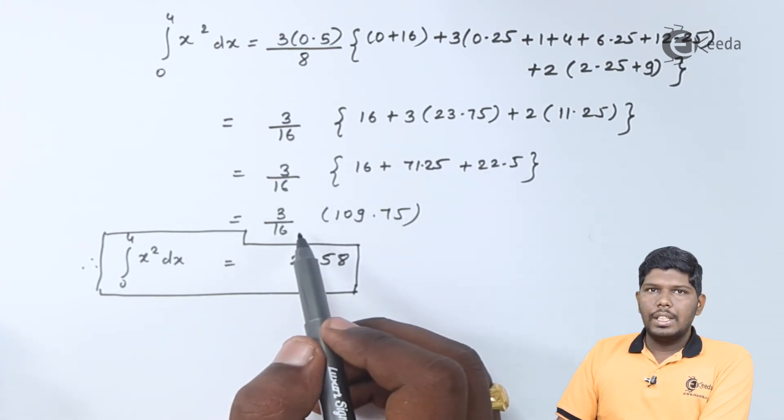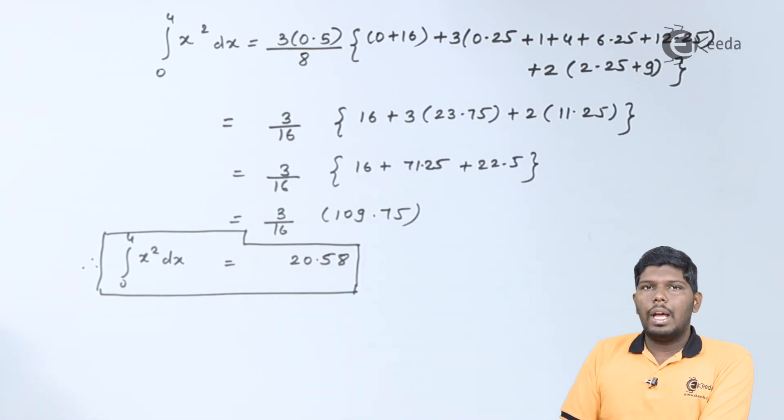Which on multiplication with 3 by 16 will give you 20.58 approximately. This becomes our final answer. I hope friends, you have understood this problem. Thank you for watching this video. Stay tuned with Ikeda and subscribe to Ikeda.